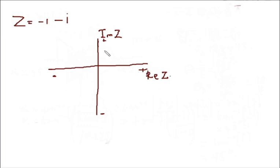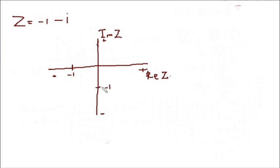If we have to draw on this diagram, for the real part we have negative 1, so negative 1 stands here. For the imaginary part, the coefficient of the imaginary part is negative 1, so negative 1 should be around here. We pick the intersection point between those two.